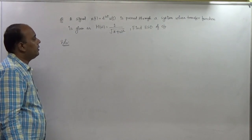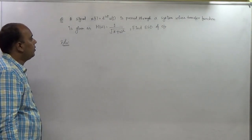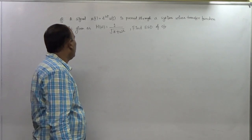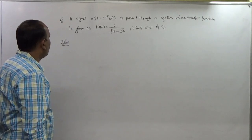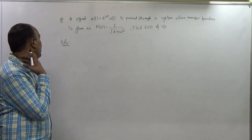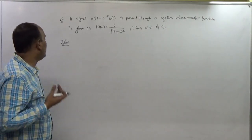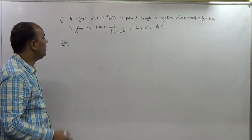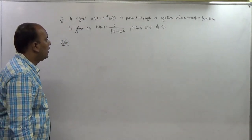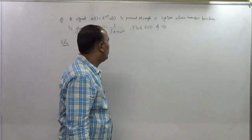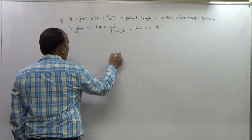This question is related to the energy spectral density of a function. We have an ILTI system where the input is x(t) = e^(−2t) · u(t), and the transfer function of the system is given by H(ω) = 1 / √(8² + ω²). We have to find the energy spectral density of the output.